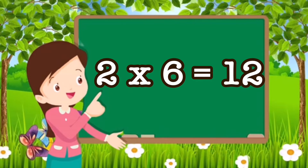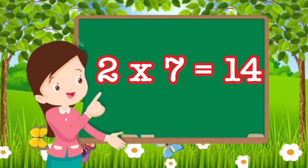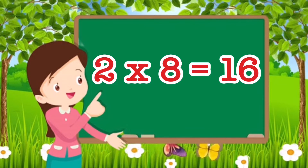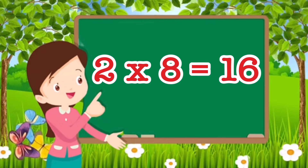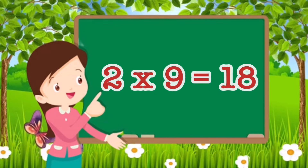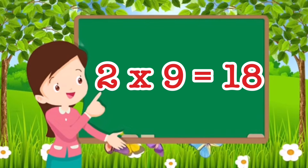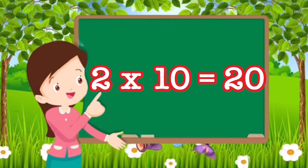2 sixes are 12. 2 sevens are 14. 2 eights are 16. 2 nines are 18. 2 tens are 20.